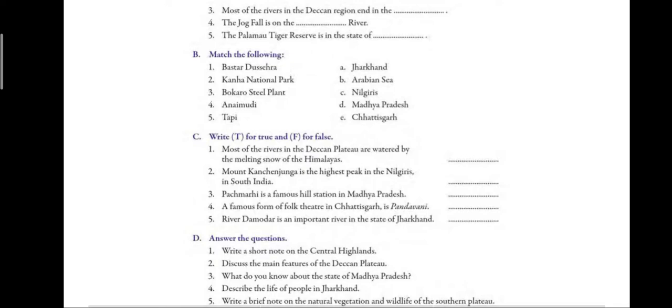Second: Mount Kanchenjunga is the highest peak in the Nilgiri in south India. The answer is false, because Anay Mudi is the highest peak in the Nilgiri. Third: Pachmarhi is a famous hill station in Madhya Pradesh. The answer is false — Pachmarhi is an important city in Madhya Pradesh. Fourth: a famous folk form of Chhattisgarh is Pandavani — this is true. Fifth: river Damodar is an important river in the state of Jharkhand — this is also true.